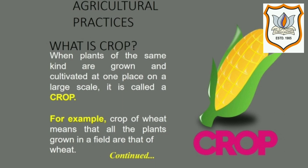Another category is pulses, which include gram, chana, pea, and beans. The third category is oilseeds, which include mustard, groundnut, and sunflower, from which we extract oil.